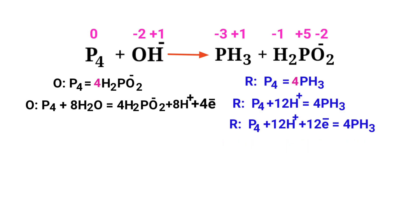The electrons lost in the oxidation half reaction must equal the electrons gained in the reduction half reaction. The oxidation half reaction has four electrons and the reduction half reaction has 12 electrons. To balance the electrons, multiply the oxidation half reaction by a coefficient of 3.